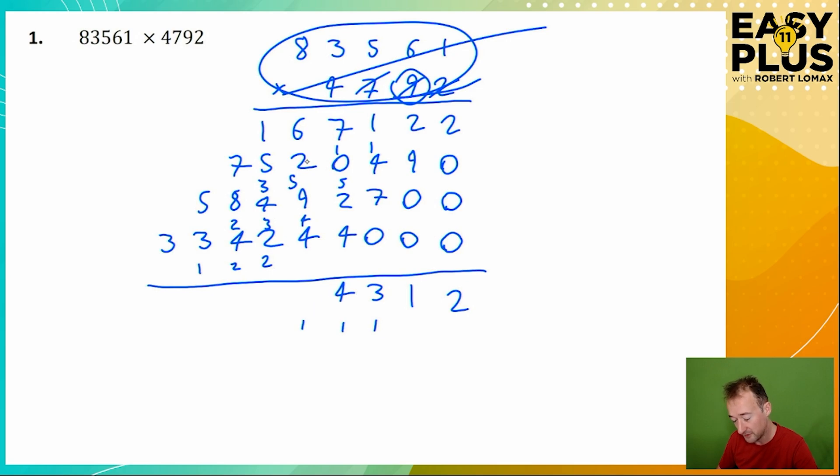6 plus 2 is 8, plus 9 is 17, plus 4 is 21, plus the carried 1 is 22. 5 plus 1 is 6, plus 4 is 10, plus 2 is 12, plus 2 is 14.